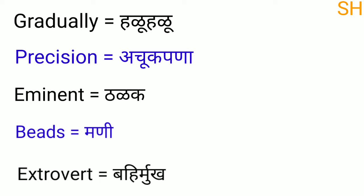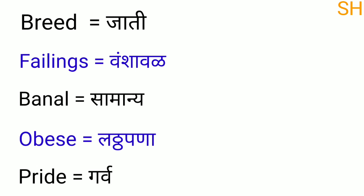Hello, this is common English words. Let's begin with the first word. Gradually means hudu hudu. Precision means achub pana. Eminent means thadak. Beads means money. Extra word means bahir mo. And next word, breed, breed means jati.